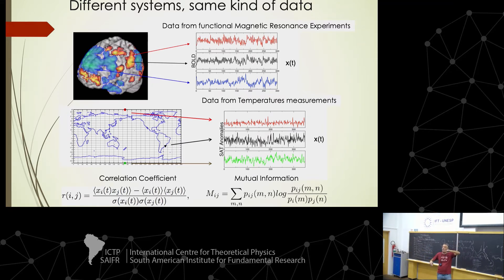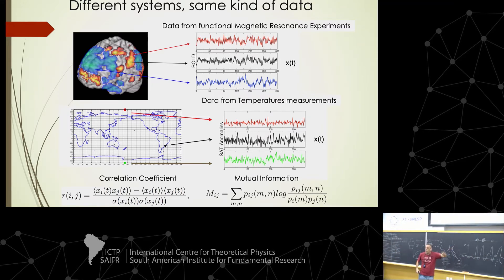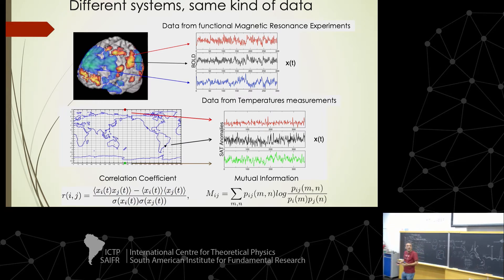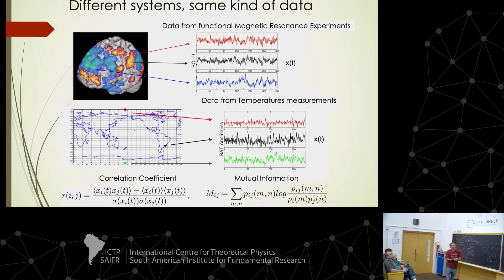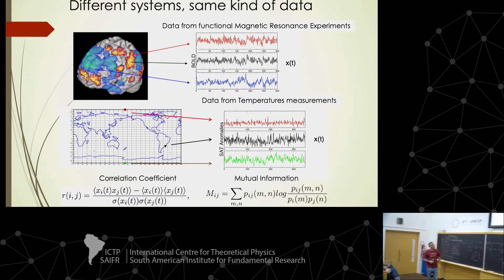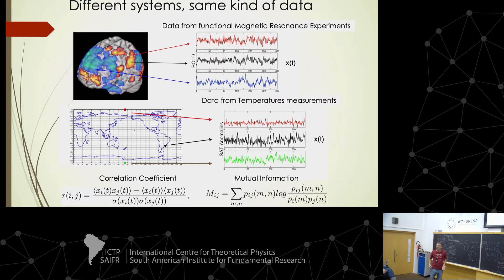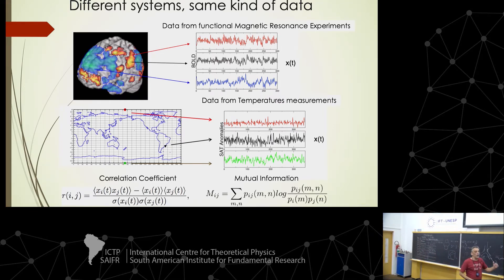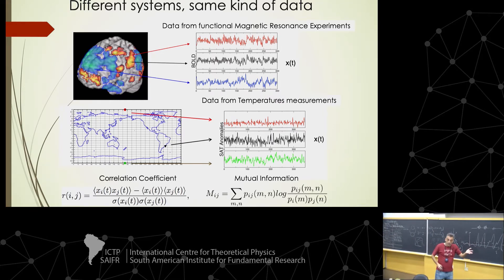In fMRI experiments, we have very high spatial resolution — activity in regions about 3 millimeters cubed, called voxels, the three-dimensional version of a pixel. However, we lose temporal resolution because the scanner covers the whole brain sequentially. Typically we sample a signal every about 2.5 seconds. The time series is usually about 15 minutes since it's quite uncomfortable to remain still in the resonator. In both the climate and brain problems, we have an extended system where each point has a temporal signal.